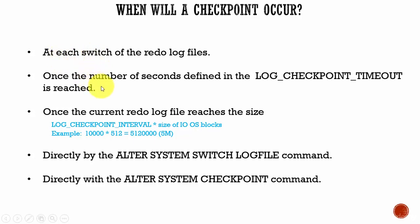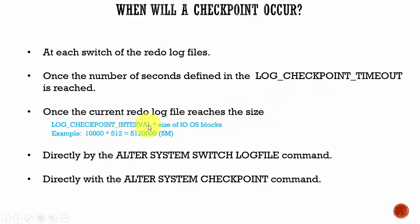The second scenario is once the number of seconds defined in the log_checkpoint_timeout parameter is reached, a checkpoint occurs. For example, if it is set to 60 seconds, then every 60 seconds the checkpoint occurs. The third scenario is once the current redo log file reaches a size equal to the log_checkpoint_interval parameter multiplied by the OS block size. If the OS block size is 512 bytes and log_checkpoint_interval is set to 10,000, then once the redo log file reaches 5 MB the checkpoint occurs.